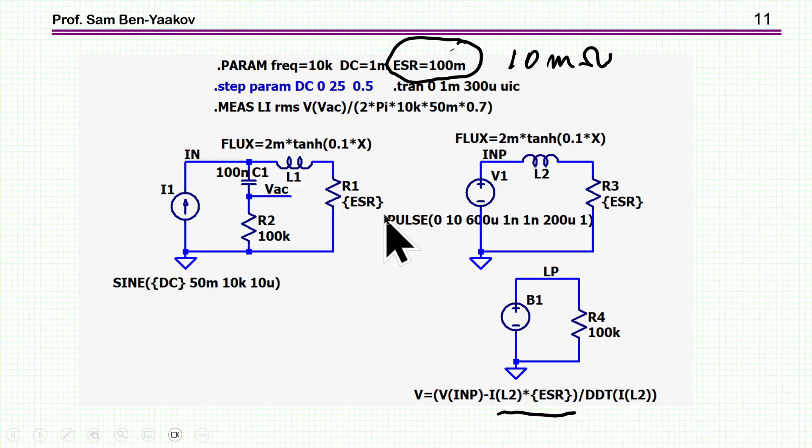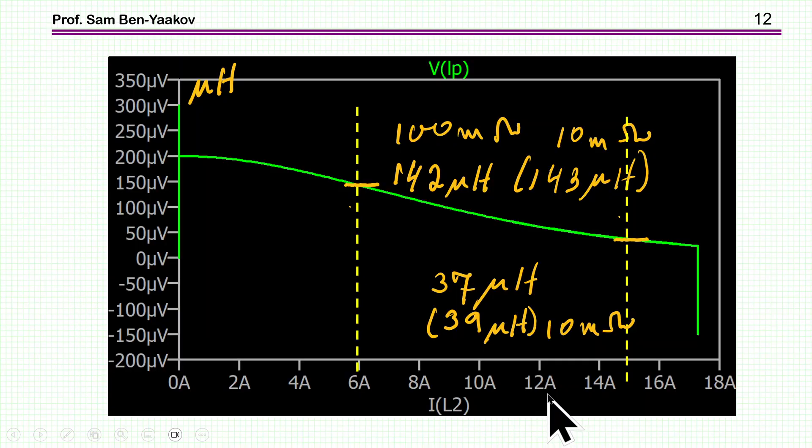I'm going to see what is the effect of an increased ESR. As I've said, due to the fact that I am subtracting the voltage across the ESR, I wouldn't expect much of a change. And indeed, if I look at the results, we see that it's about the same thing. It's 142 rather than 143 with the 10 milliohm, and here it's also a small difference between the 100 milliohm and the 10 milliohm.